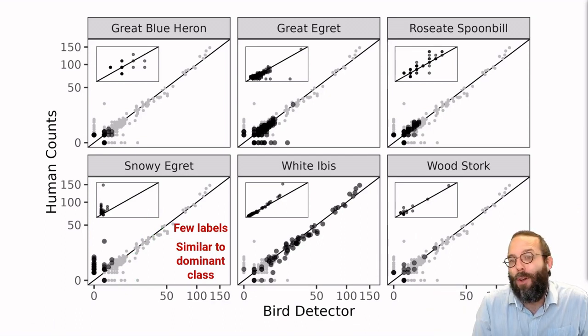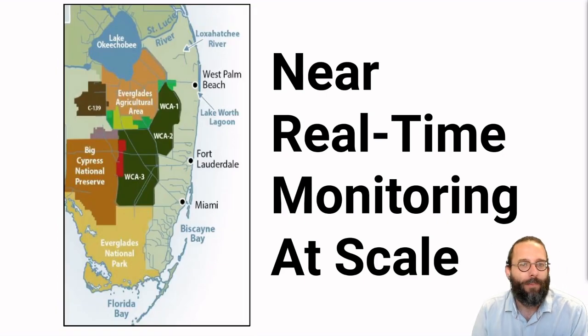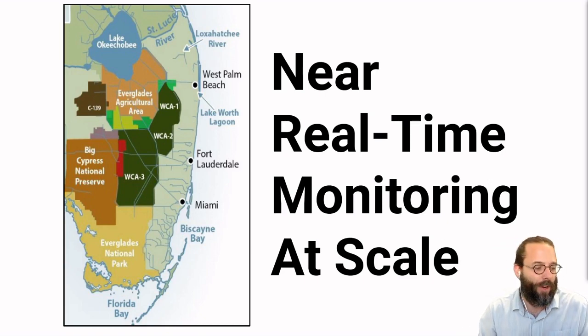Okay, so overall, this is great, right? We're happy with ourselves. We can write a paper. We'll be famous in the ecology computer vision world of like 25 people, most of whom are on this call. But our real goal here isn't building a good model. Our real goal is in conducting near real-time monitoring of tens to hundreds of thousands of birds. And that means we need infrastructure to help us handle prediction.